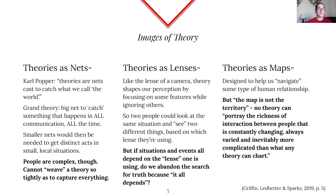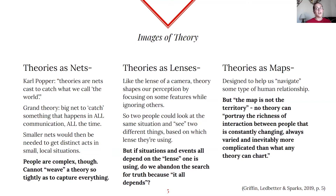Theories as nets: Karl Popper said that theories are nets cast to catch what we call the world. You can have grand theories — like big nets — but claiming something happens in all communication instances all the time is really hard to pin down because people are very complex. You'd still need smaller nets to catch smaller fishes and capture distinct acts in small, individual-level situations. People are not fish — you cannot weave a theory so tightly as to capture everything. It's nigh on impossible to say all people do this in all situations.